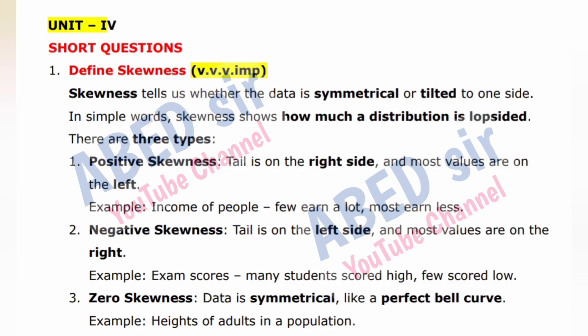Type 2: Negative skewness — the tail is on the left side and most values are on the right. Example: exam scores — many students scored high, few scored low. Type 3: Zero skewness — data is symmetrical, like a perfect bell curve. Example: heights of adults in a population.